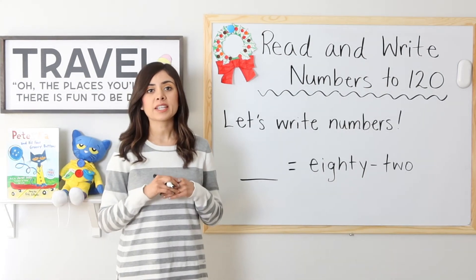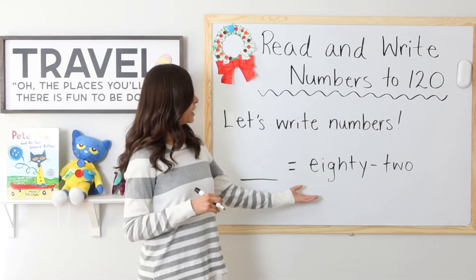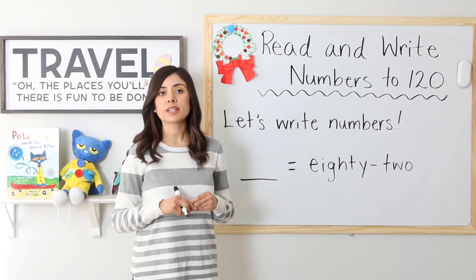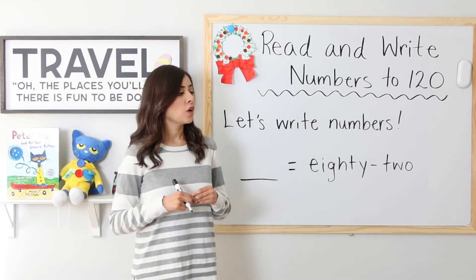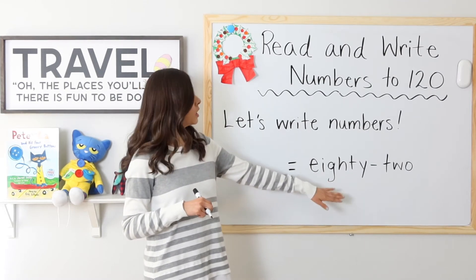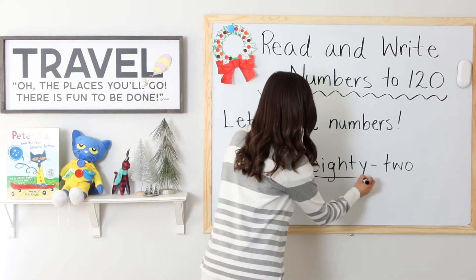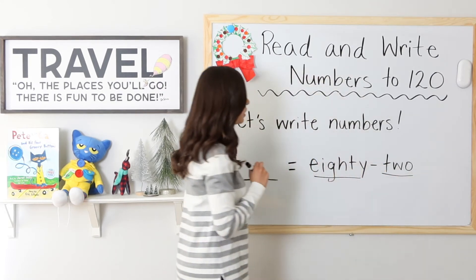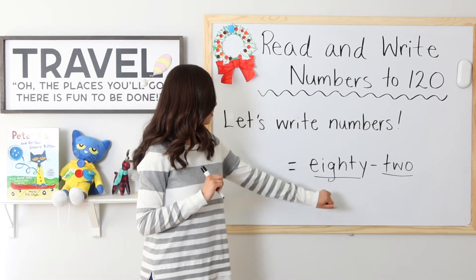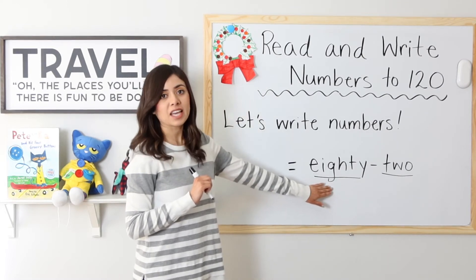Okay, now let's practice writing numbers. I have 82. So how do I know how to write this as a number? Well, let's focus on our place value. I have 82. How much do I have in my tens place? 80. Okay, so that's eight tens, right? So eight tens.